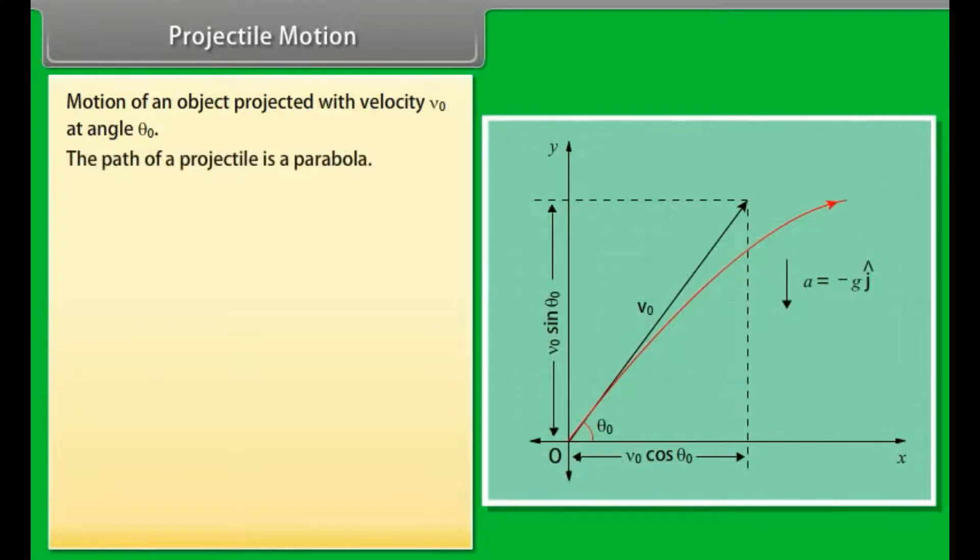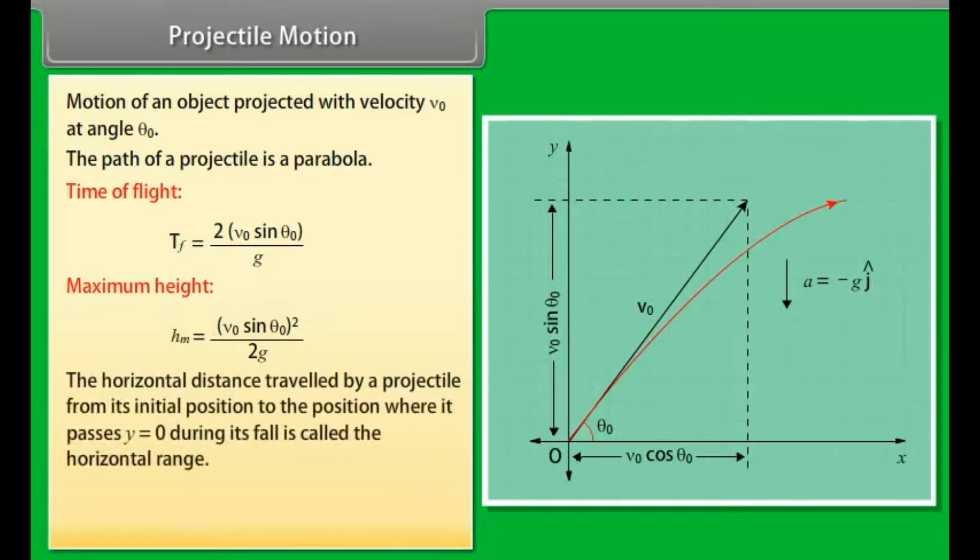Motion of an object projected with velocity v₀ and angle θ₀ is shown in figure. The path of a projectile is a parabola. Time of flight of projectile is Tf = 2v₀sinθ₀/g. Maximum height of a projectile is Hm = v₀²sin²θ₀/2g. The horizontal distance travelled by a projectile from its initial position to the position where it passes y = 0 during its fall is called the horizontal range. Horizontal range of projectile is given by v₀²sin2θ₀/g.